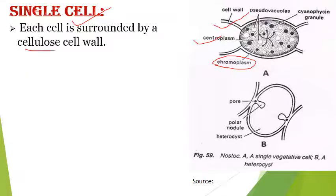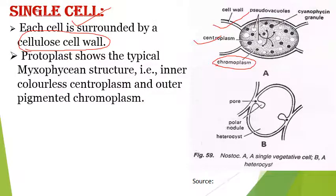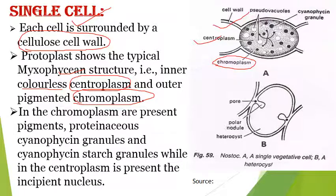Each cell is surrounded by a cellulose cell wall. The protoplast shows a typical myxophycean structure. The inner colorless portion is called centroplasm, and the outer pigmented portion is called chromoplasm. The chromoplasm contains proteinaceous cyanophycean granules and cyanophycean starch granules. The centroplasm contains an incipient nucleus — a true nucleus is not present; the genetic material lies in the centroplasm of the cell.